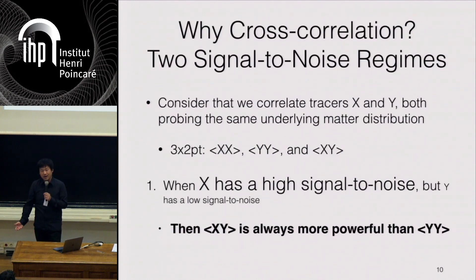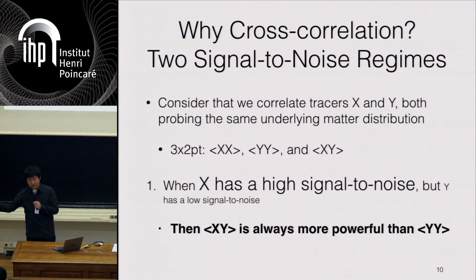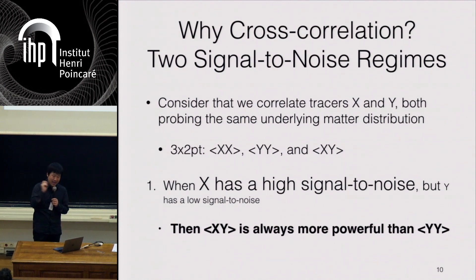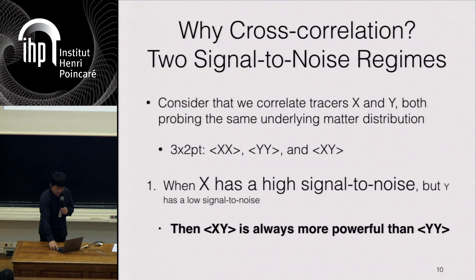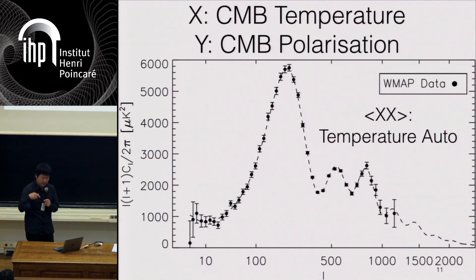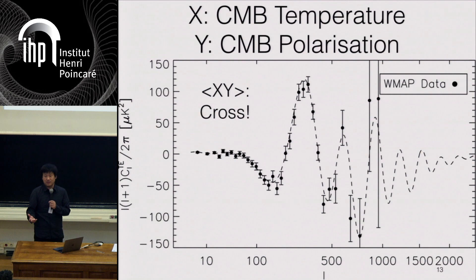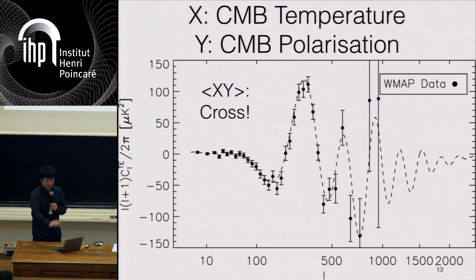Why cross-correlation? Why do we even care? There are two signal-to-noise regimes where the power of cross-correlation becomes apparent, and a third is physical reasoning. Let's start with tracers X and Y — you have XX, YY, and XY cross-correlations. When X has very high signal-to-noise but Y has very low signal-to-noise, but you know there's a signal in common, then XY is always more powerful than the noisy YY auto. For example, the temperature power spectrum from WMAP is very high signal-to-noise, but when you go to the E-mode power spectrum it's pretty noisy. When you cross-correlate them, you get a huge signal out — the EE auto is pretty much useless, but the TE cross is so much more powerful.